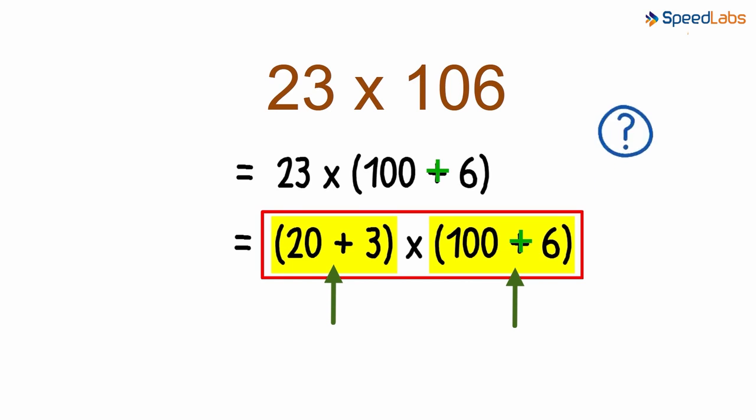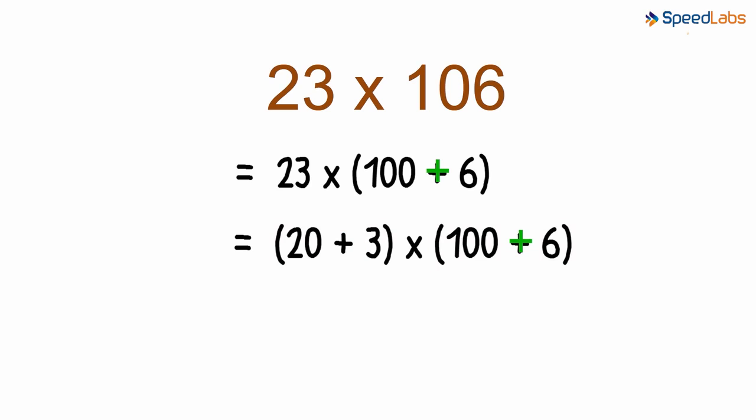So how are such cases simplified for expansion? Here you need to understand that we can consider 20 plus 3 as a single term. That means we will multiply the expression 20 plus 3 with both the numbers inside the second set of brackets.